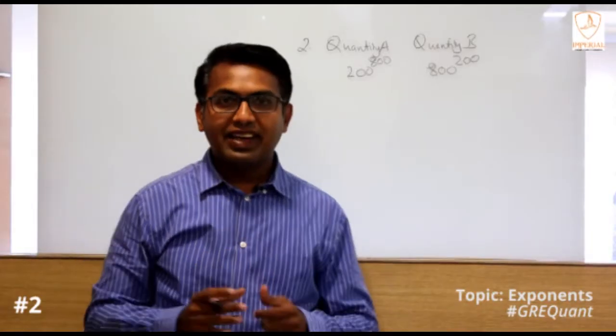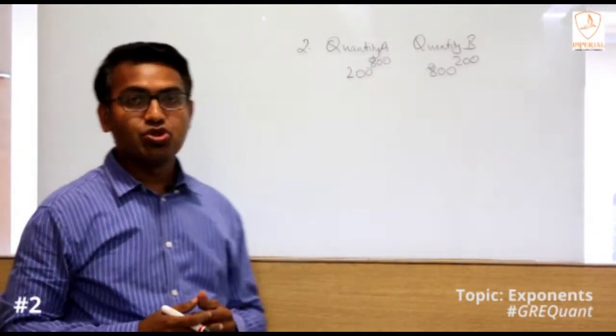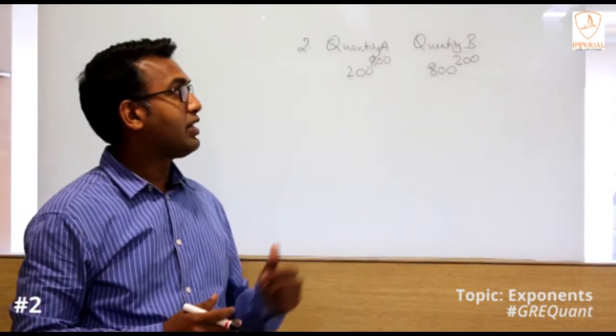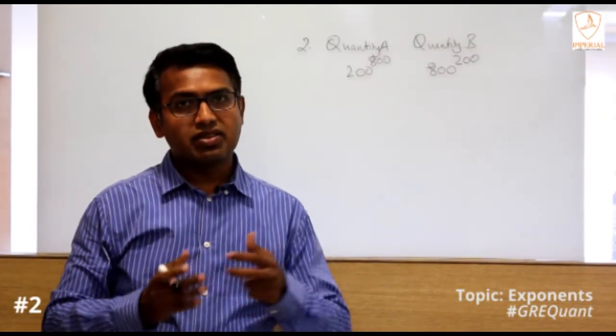Alright guys, let's take a look at question number two. Quantity A: 200 power 800, and Quantity B: 800 power 200. Again, it is a comparison question - which column is bigger?